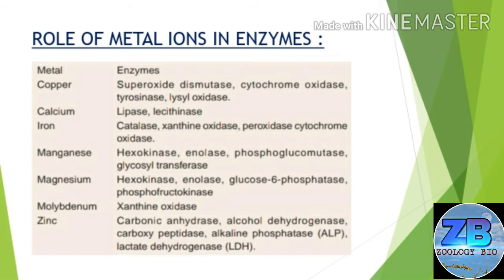Copper-containing enzymes are superoxide dismutase, cytochrome oxidase, tyrosinase, and glycyl oxidase. Calcium-containing enzymes are lipase and lecithinase. Iron-containing enzymes are catalase, xanthine oxidase, peroxidase, and cytochrome oxidase. Manganese-containing enzymes are hexokinase, enolase, phosphoglucomutase, and glycosyltransferase. Magnesium-containing enzymes are hexokinase, enolase, and glucose-6-phosphatase.